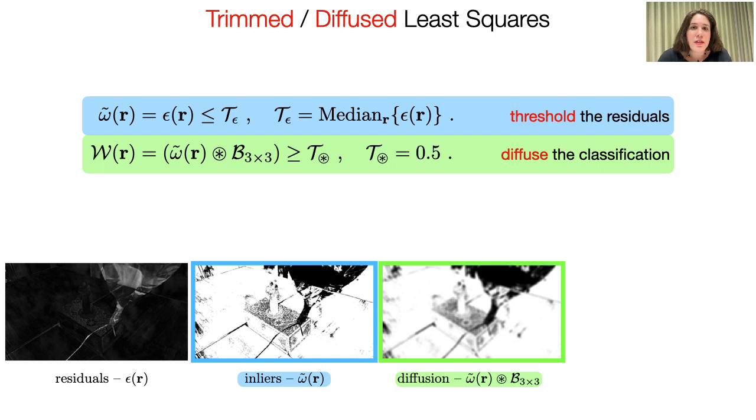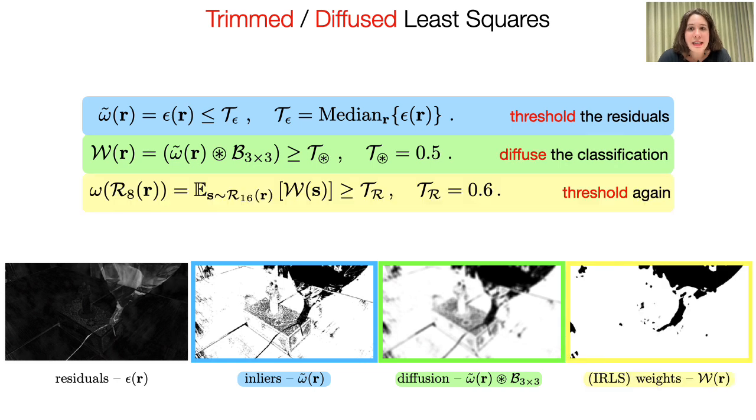Then, relying on the spatial consistency of the outlier objects, we regularize the weight mask by diffusing the residual mask.